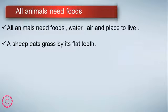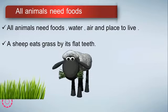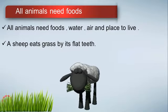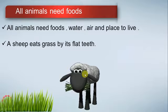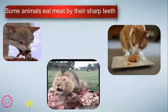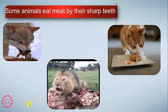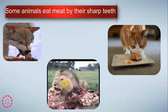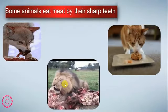A sheep eats grass by its flat teeth. They have different teeth and different habits for eating foods. This is the sheep — they have flat teeth to eat the grass. Some animals eat meat by their sharp teeth.